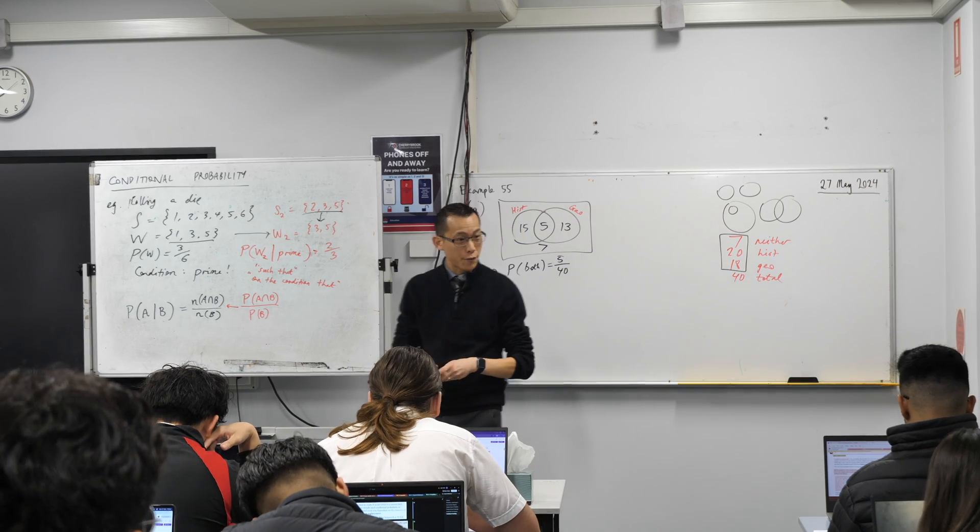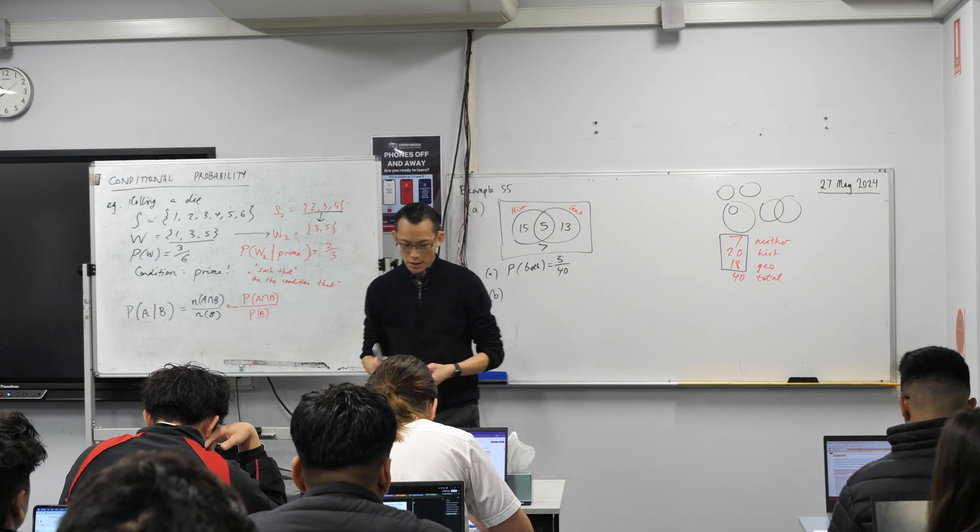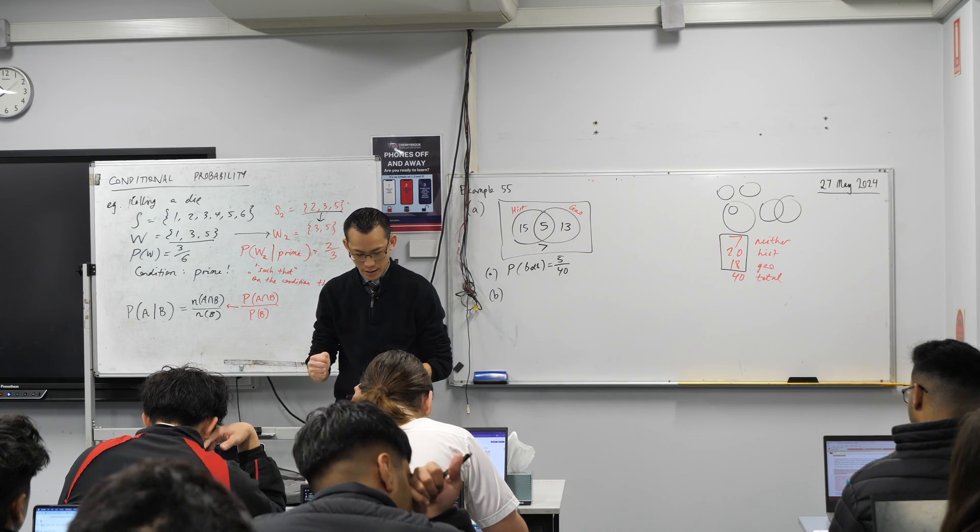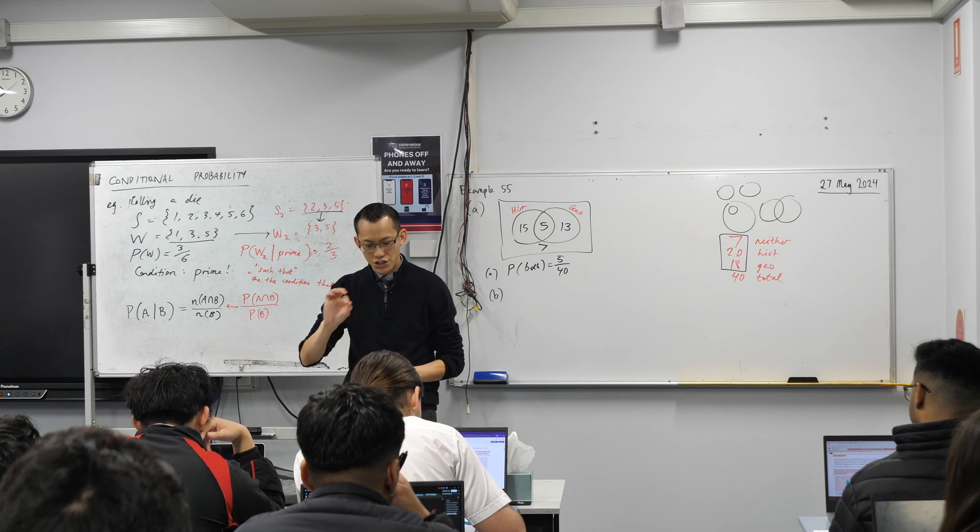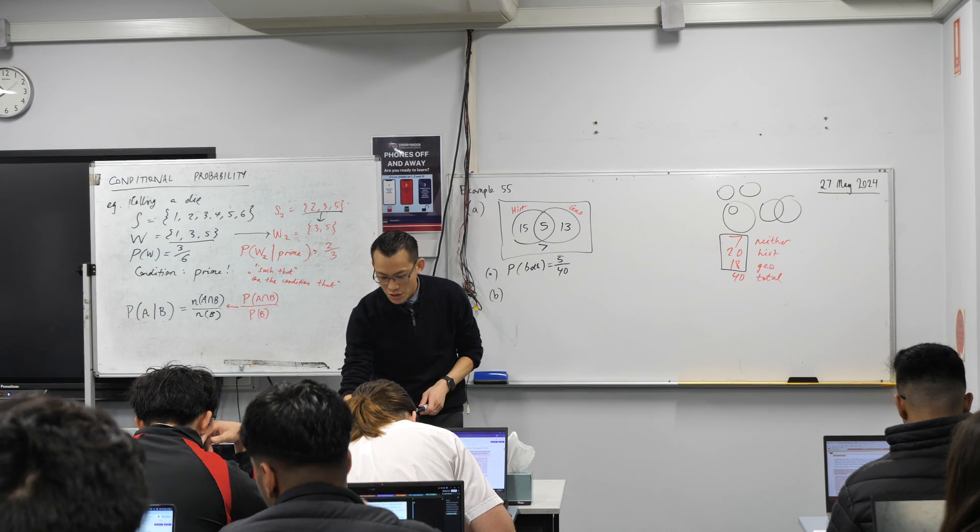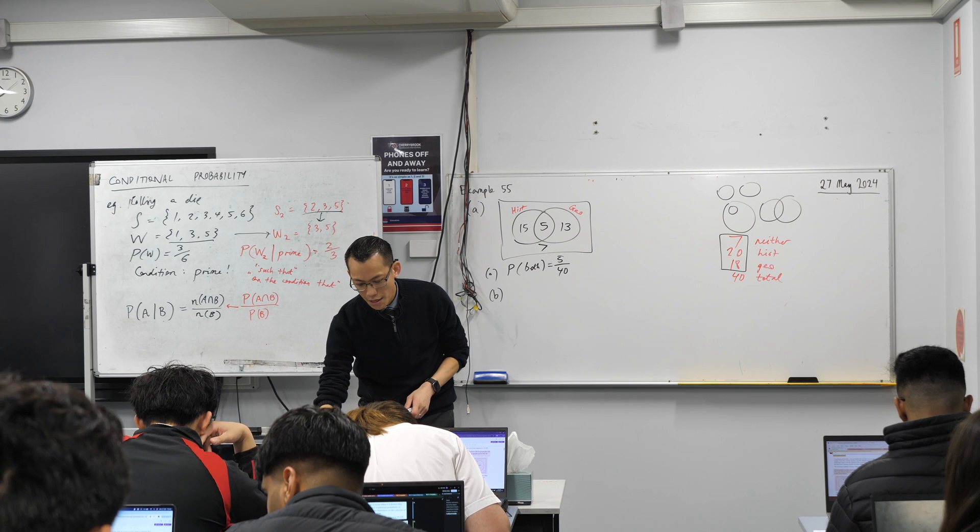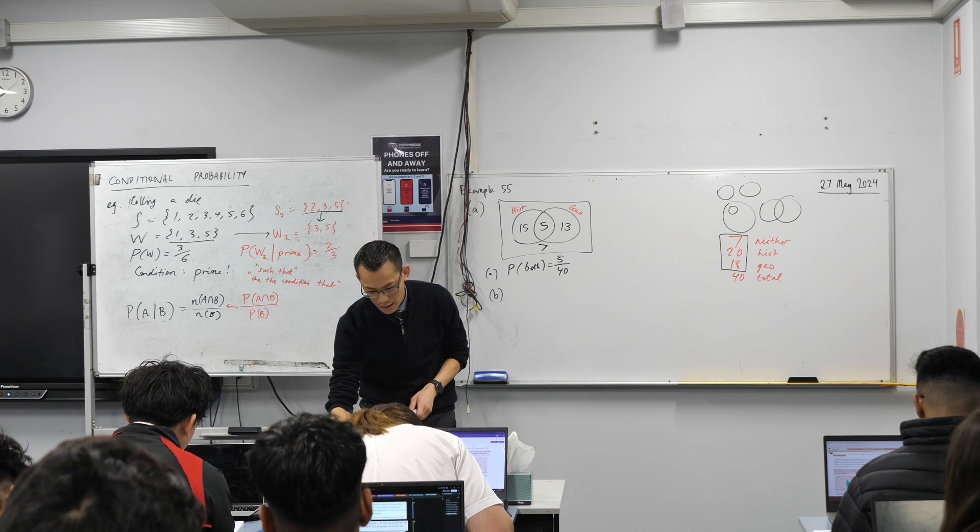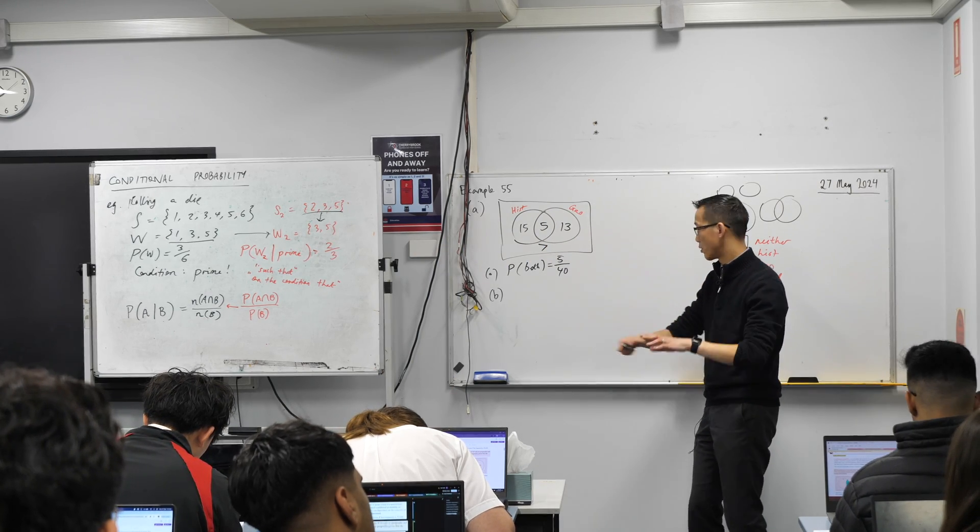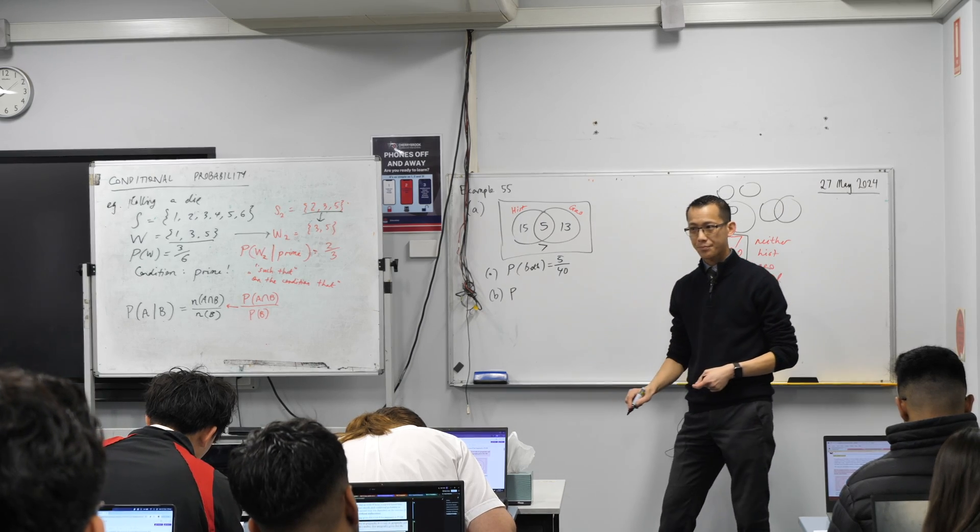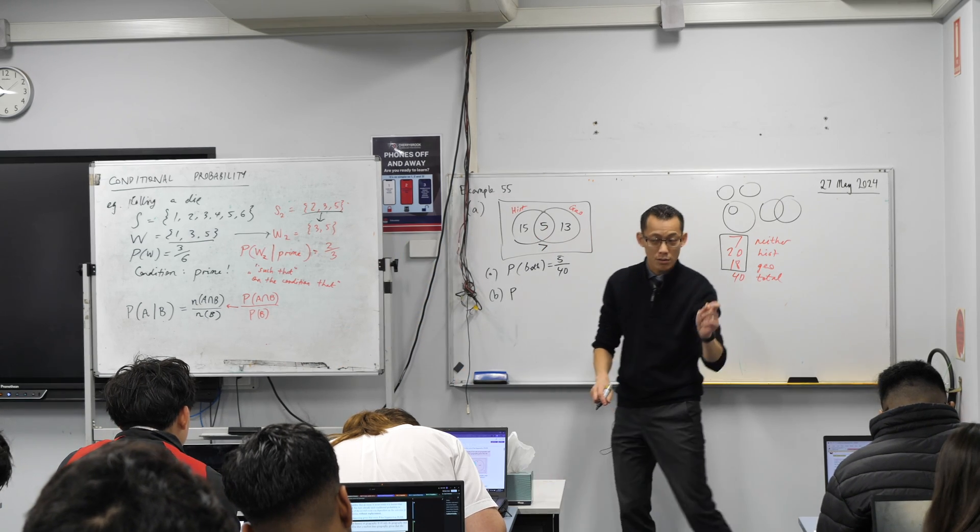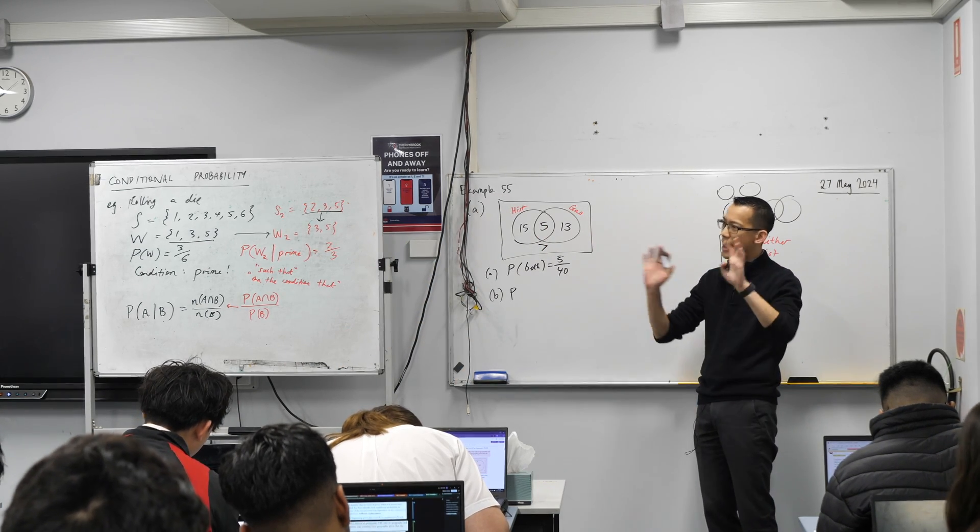Now, sorry, because you can't see part B. Let me read it for you. Students chosen at random, given that the student studies geography, what's the probability that the student doesn't study history? I'll repeat that one more time. Given that the student studies geography, what is the probability that the student does not study history? Before anyone jumps out and answer with me, I want to figure out how do we write this down? Probability, known that the student studies geography, what's the probability that they don't study history? What are our A and our B in this case?